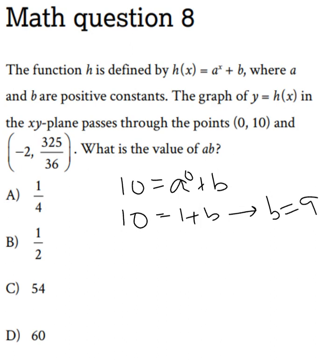Now let's try to use that second point, (-2, 325 over 36). So again, we can plug in 325 over 36, and now we know that a to the negative 2, you have to add 9.